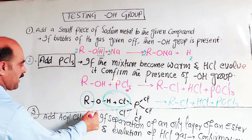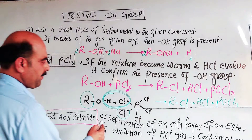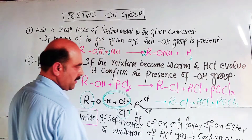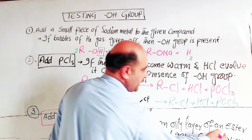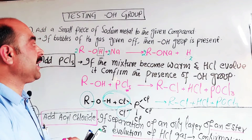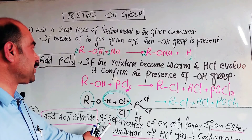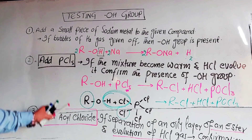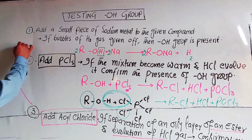Add acyl chloride to the given compound. If separation of an oily ester layer occurs and HCL gas is evolved, it means the given compound is an alcohol with an OH group present. Take note of this reaction.